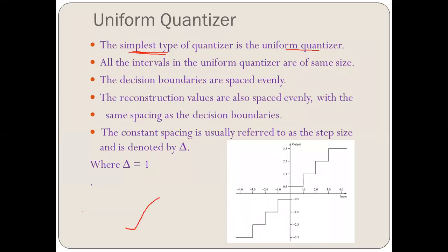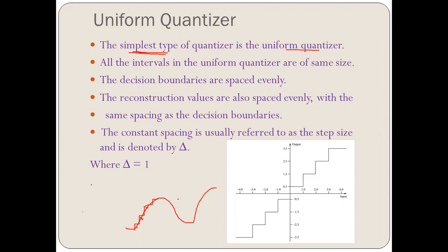If we have a continuous sequence of signal — an analog signal — what we are doing is digitizing it. When we digitize it to a specific point, some information is lost. This information is lost due to digitization, and this loss is the quantization. Some distortion, noise, or error is introduced, and that is why quantization is associated with lossy compression — because we are losing some information.